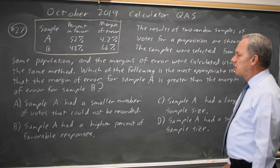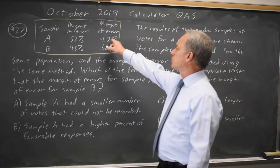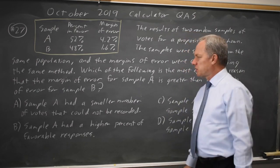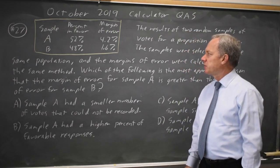Which of the following is the most appropriate reason that the margin of error for sample A, 4.2%, is greater than the margin of error for sample B, 1.6%.